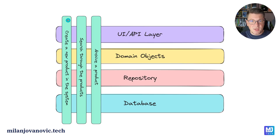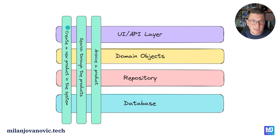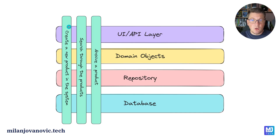What vertical slice architecture does is organize the components needed to implement one feature — for example, creating a new product — into a single vertical slice. This might require an API endpoint, a handler for the use case, and the respective repository and domain entities, all defined inside one vertical slice. We can then repeat this process for other features in the application.